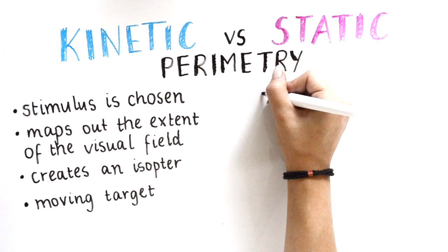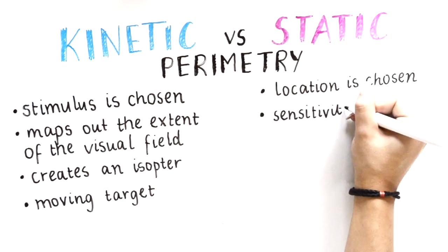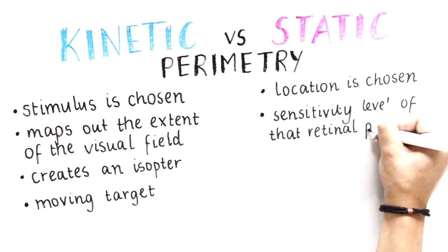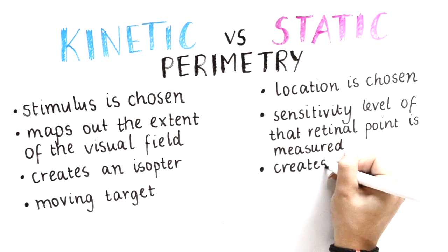In contrast, a static test consists of a stationary target where instead of a stimulus being chosen, the location is. It is a measurement of the sensitivity level of a specific retinal area within the visual field, creating a hill of vision.